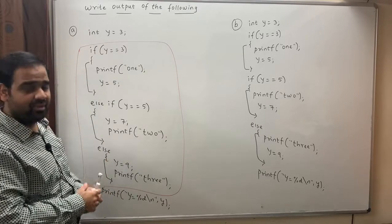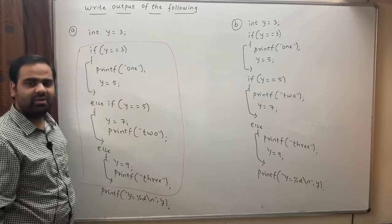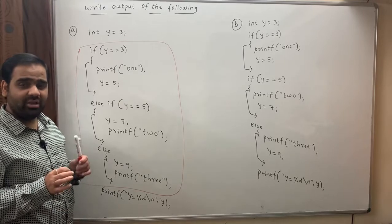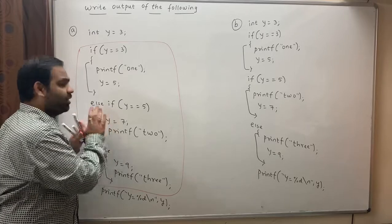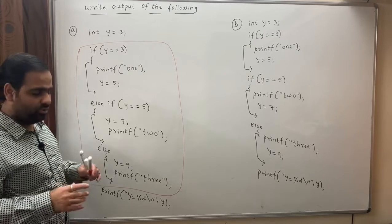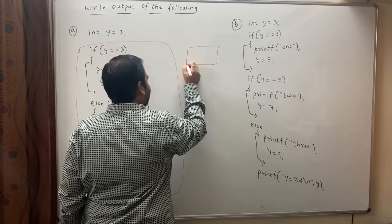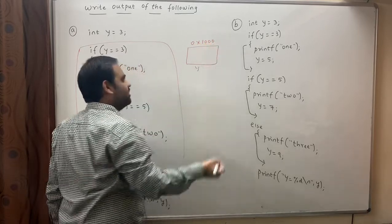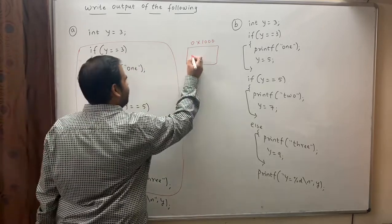Now let's try to understand the working of this and write down the output for this particular question. Before I write the output, I want everyone to pause the video and try to write down the output. Now, we have one variable y. Let the address of the variable y be 0x100 — you can give any address of your choice — and the value of y happens to be 3.